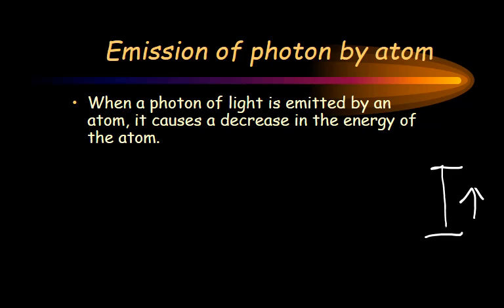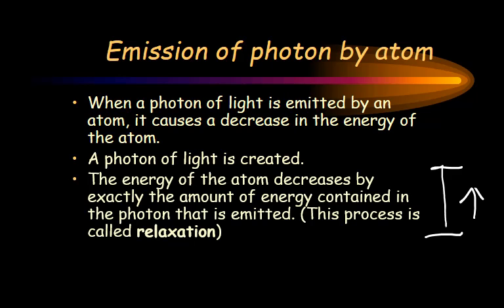When a photon of light is emitted by an atom, it causes a decrease in energy of the atom. The atom itself loses energy as it shoots a photon out, and the energy of the atom decreases by exactly the amount of energy contained in the photon that is emitted — at those very specific levels. This is called relaxation.